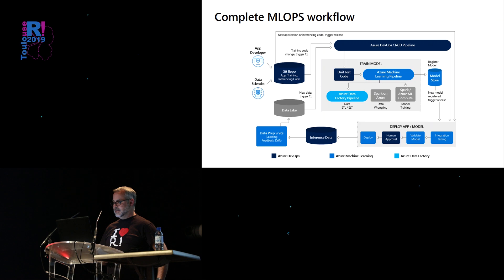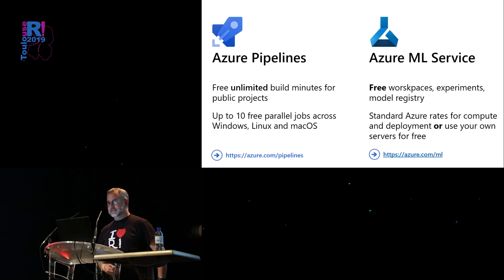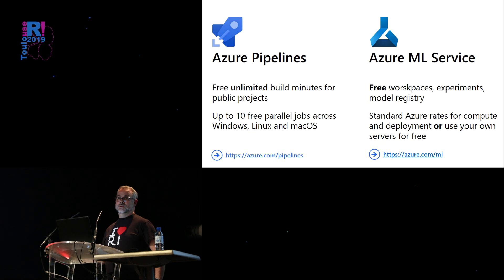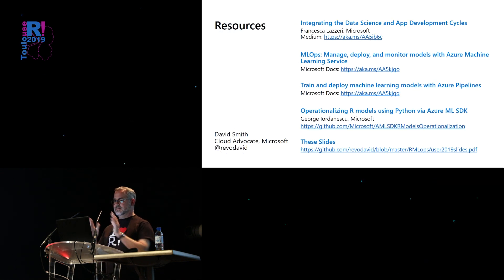I know that's a very complicated diagram, but I'll give you a link to a complete paper that describes the entire process. Azure Pipelines is free to use for all public projects — great for open source — and even for private projects, you can run up to 10 parallel jobs at a time across all supported operating systems. The Azure Machine Learning Service is likewise free for all the artifacts in there. You can use your own compute resources for free, or use the Azure services and pay for them as normal. Here are some references that might be useful, and thank you very much.